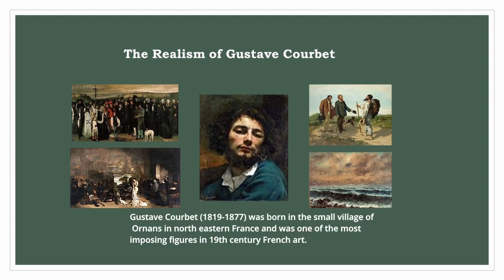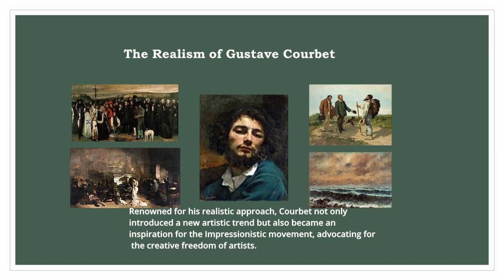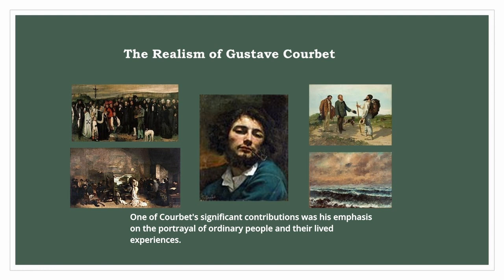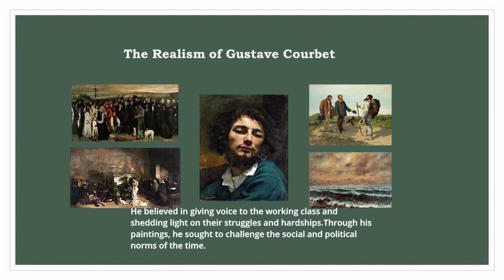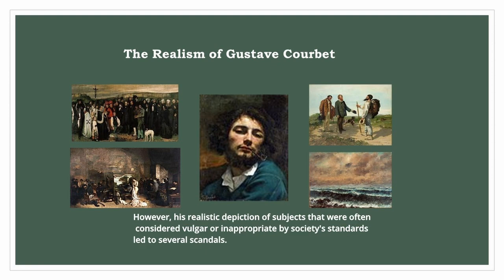Gustave Courbet (1819–1877) was born in the small village of Ornans in north-eastern France and was one of the most imposing figures in nineteenth-century French art. Renowned for his realistic approach, Courbet not only introduced a new artistic trend but also became an inspiration for the Impressionist movement, advocating for the creative freedom of artists. One of Courbet's significant contributions was his emphasis on the portrayal of ordinary people and their lived experiences. He believed in giving voice to the working class and shedding light on their struggles and hardships, seeking through his paintings to challenge the social and political norms of the time.